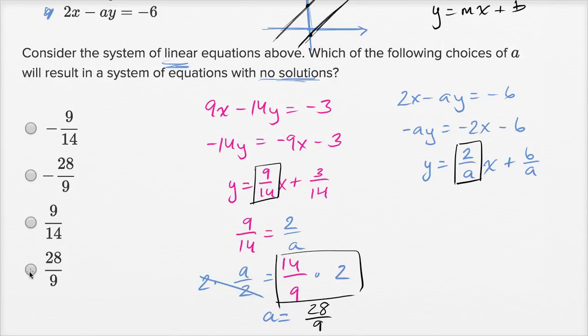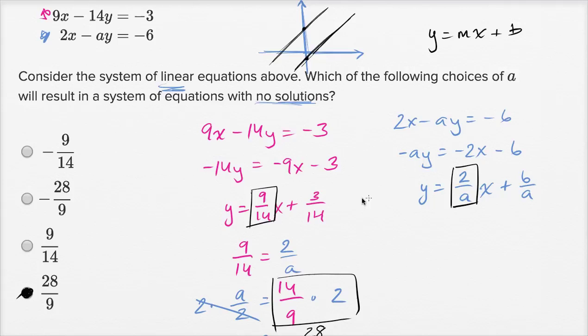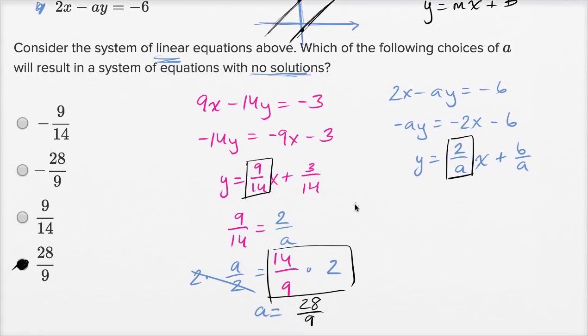So if I'm under time pressure, I already see a choice that's looking pretty good. But if we really want to verify that if a is 28 over 9, these two things are going to have the same slope. But let's make sure they don't have the same y-intercept. And I wouldn't do this if I was under time pressure, but just to feel good about it.